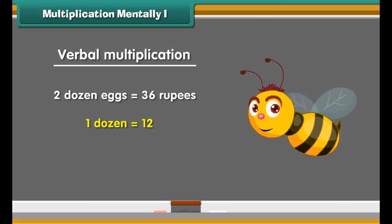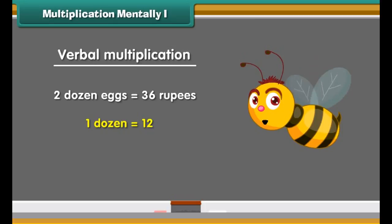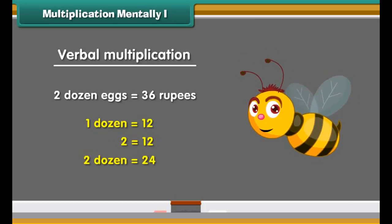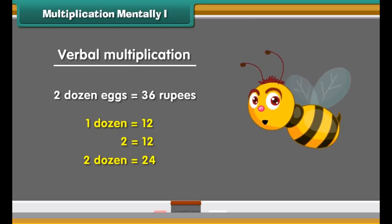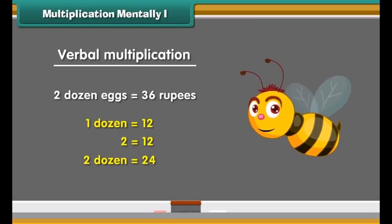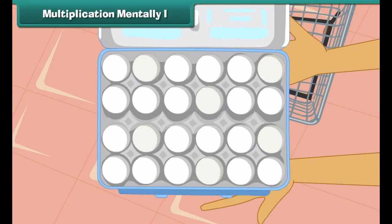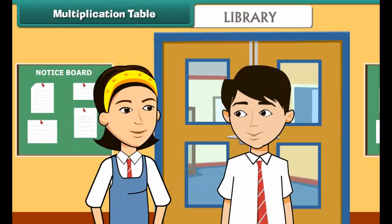Let us look at some examples of verbal multiplication. Jennifer buys 2 dozens of eggs for 36 rupees. How many eggs did she buy? We know 1 dozen equals 12, therefore 2 dozen will be equal to 24. Thus, Jennifer bought 24 eggs for 36 rupees.